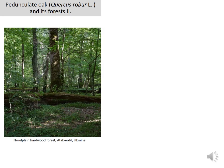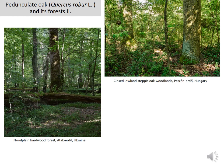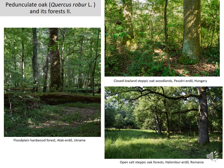This oak species can be dominant in various types of forests. For example, it can be the dominant species of hardwood flat plain forests, and also of closed lowlands, steppic oak woodlands, open salt steppic woodlands, and many more forest types. I would like to give a short overview to have insight into how an oak-dominated forest looks.